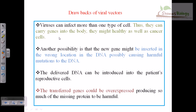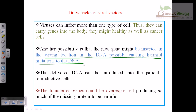The drawbacks of viral vectors include: viruses may carry genes into the body but could affect healthy as well as cancer cells. They can trigger an immune response inside our body — a major problem. Another possibility is that the new gene might be inserted in a wrong location in the DNA, possibly causing harmful mutations. Also, the delivered DNA can be introduced into the parent's reproductive cells and transferred to future generations, which could be positive or negative.